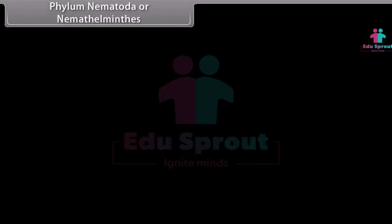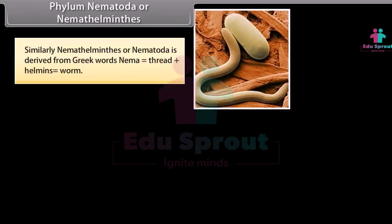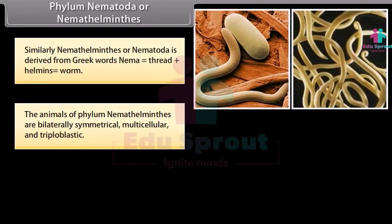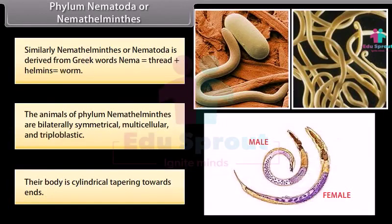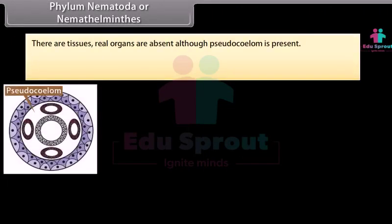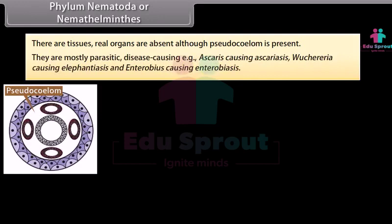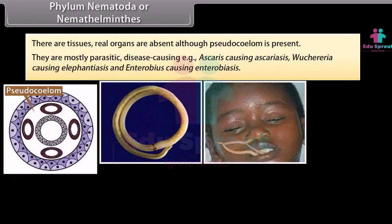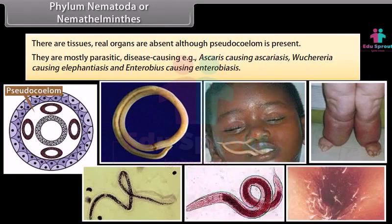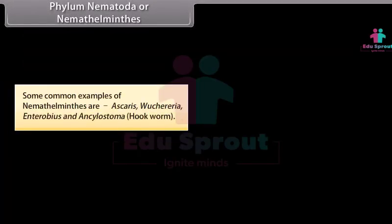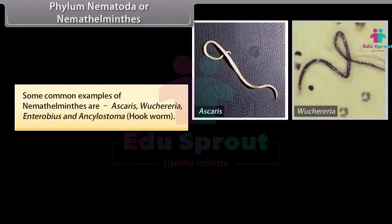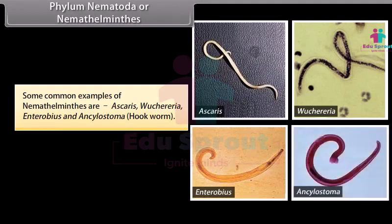Phylum Nematoda, or Nemathelminthes, is derived from Greek words: Nema, meaning thread, plus Helminthus, meaning worm. The animals are bilaterally symmetrical, multicellular, and triploblastic. Their body is cylindrical, tapering towards the ends. Tissues are present but true organs are absent, although pseudocoelom is present. They are mostly parasitic and disease-causing — e.g. Ascaris causing Ascariasis, Wuchereria causing Elephantiasis, and Enterobius causing Enterobiasis. Common examples include Ascaris, Wuchereria, Enterobius, and Ancylostoma (hookworm).